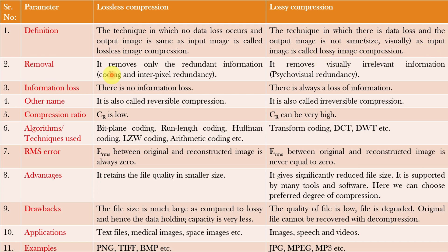For removal, lossless compression removes only the redundant information — that is, it removes coding redundancy and interpixel redundancy. While lossy compression removes visually irrelevant information, or psycho-visual redundancy, as well. For lossless compression there is no information loss, while for lossy compression there is always a loss of information to a certain extent.